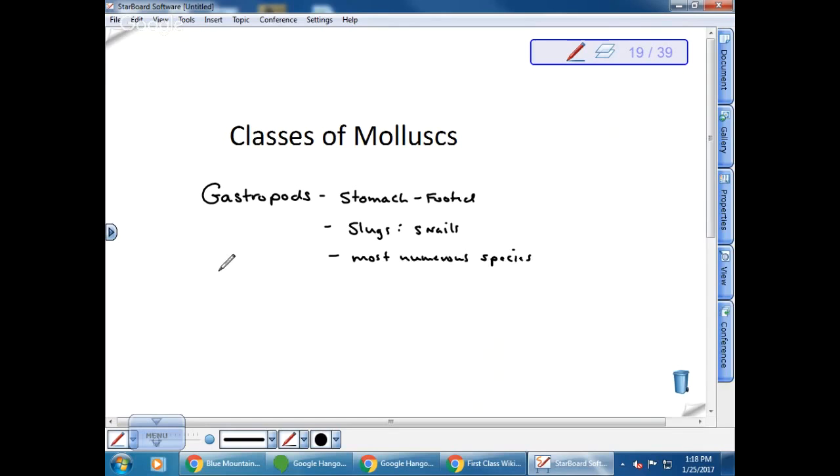We also have the clams, the oysters, and those other organisms, and they are said to be bivalves. So they're in the class Bivalvea. This means two shells, two valves. This would be clams, oysters, mussels. Thank you.